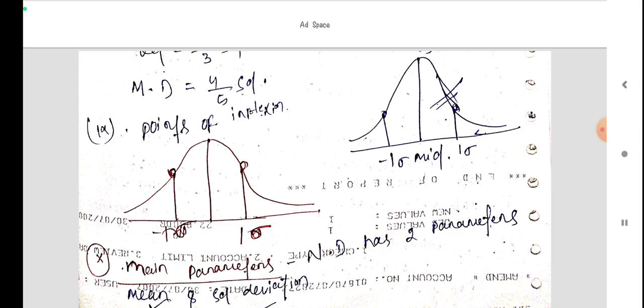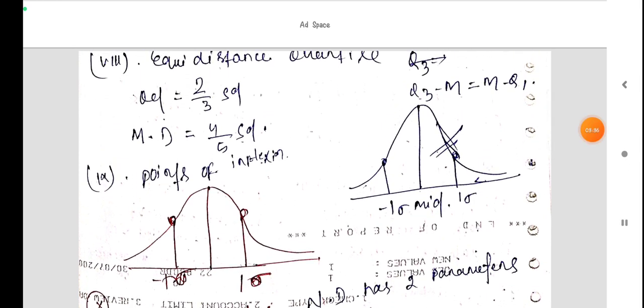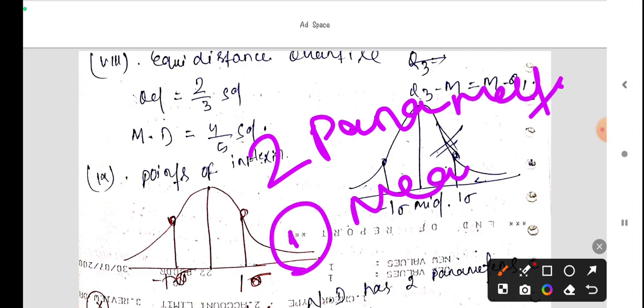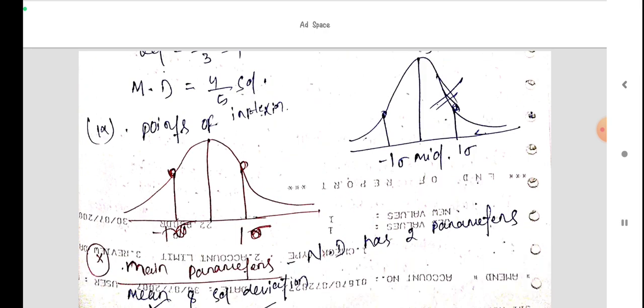Main parameters is one is mean and another is standard deviation. There are two parameters, one is mean and another is standard deviation.